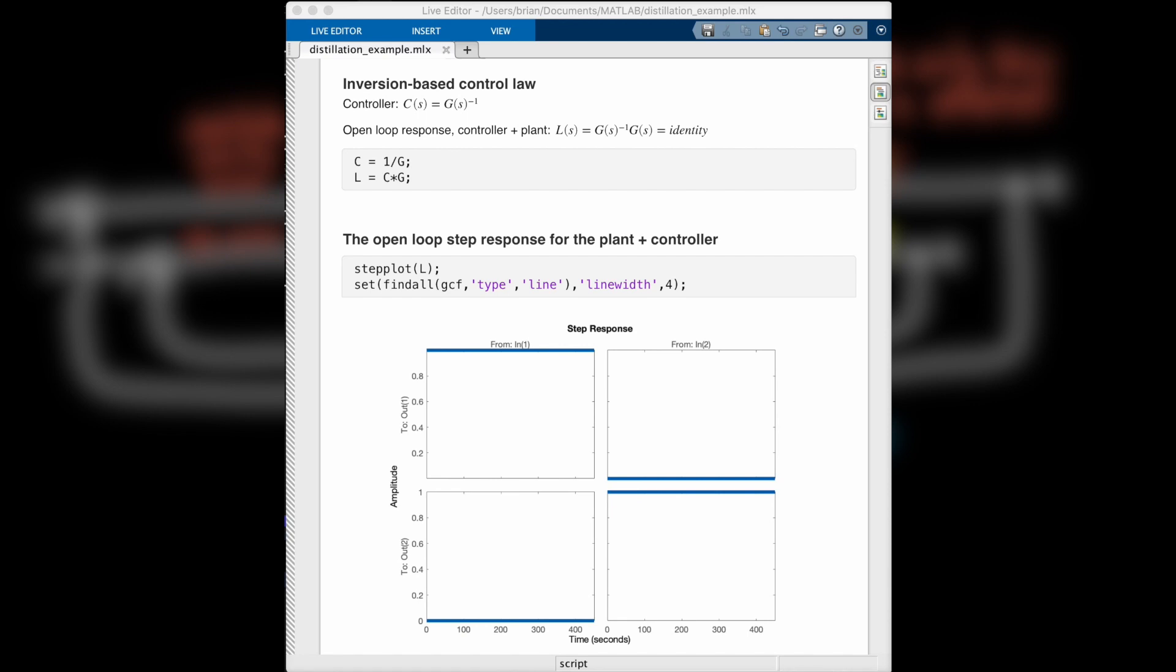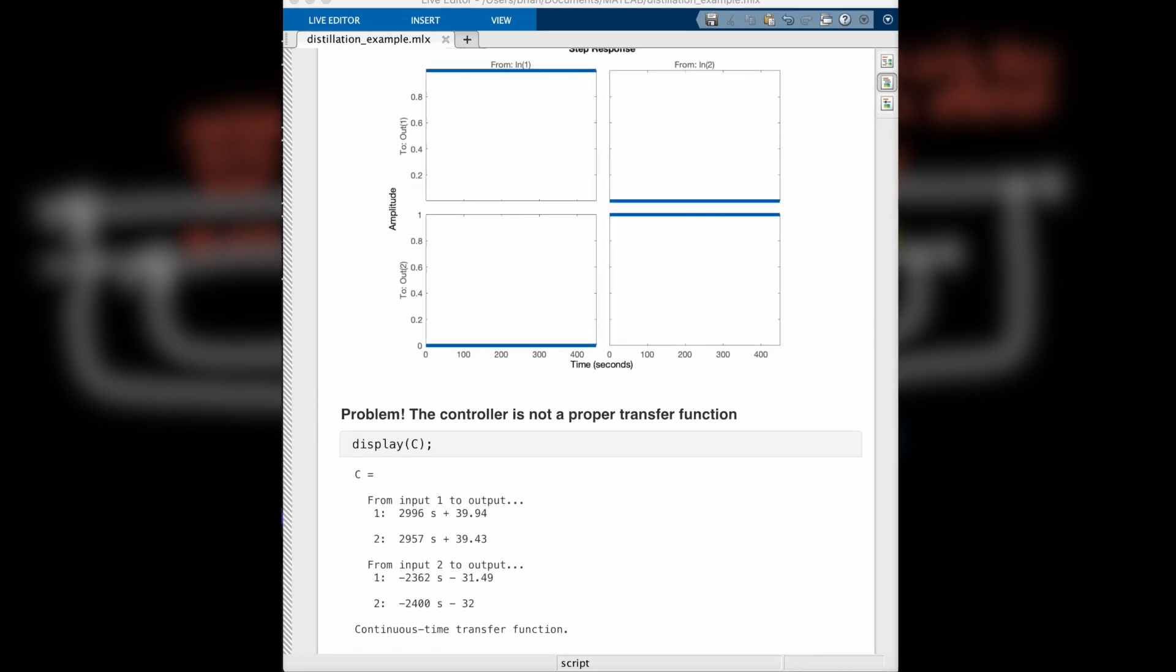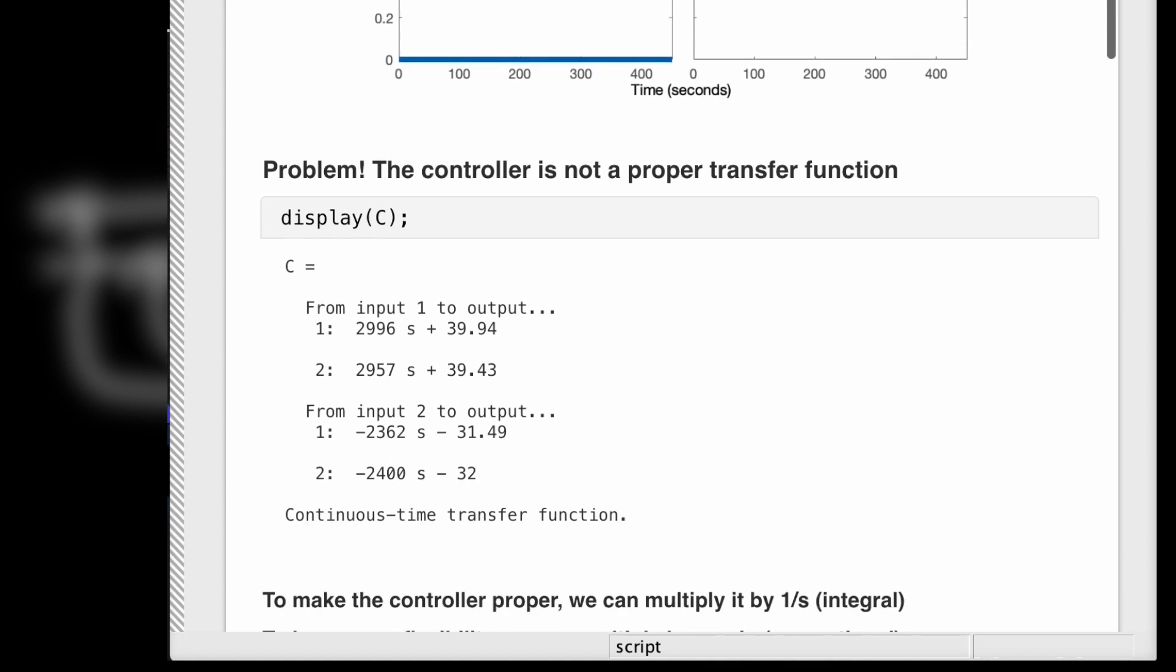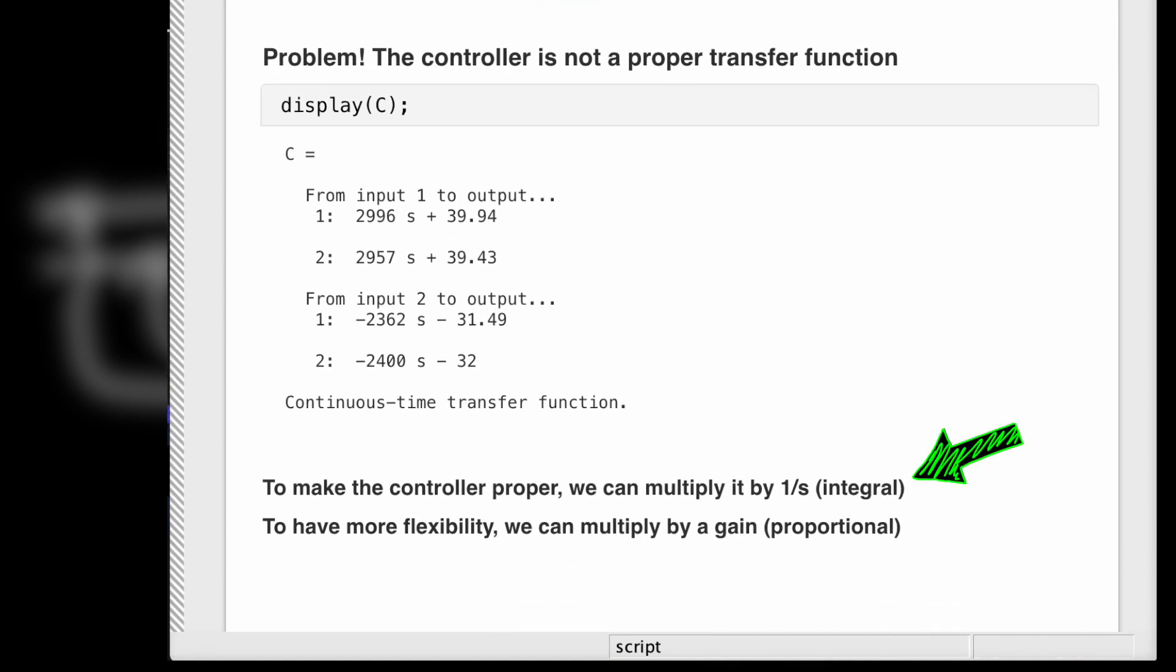But unfortunately there are two small issues with this controller. The first is that we don't have a way to adjust the gain, it's just always one. And the second and more important issue is that it's not a controller that we can actually implement, because it creates an improper transfer function. That is, the order of the numerator is larger than the order of the denominator, so it's a non-causal system. But that's okay, because we can fix both of those issues by multiplying the controller by an integrator, 1 over s, to make it proper, and by a variable gain to give us the flexibility in the design.